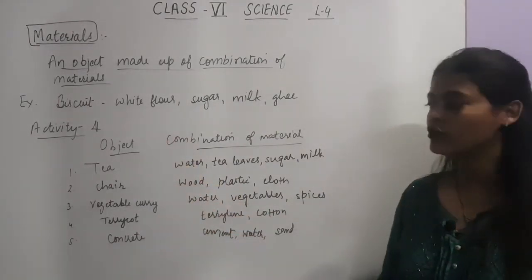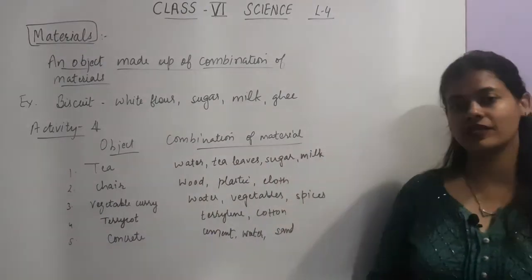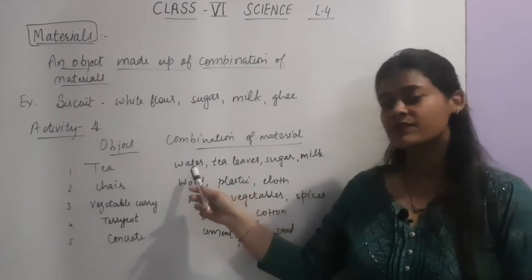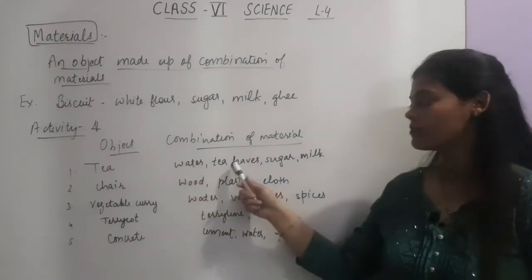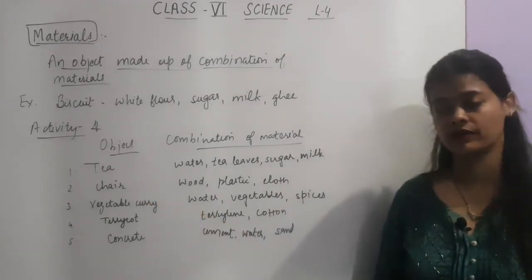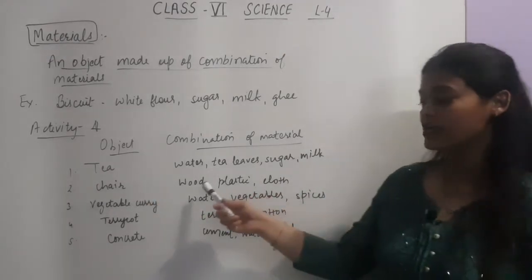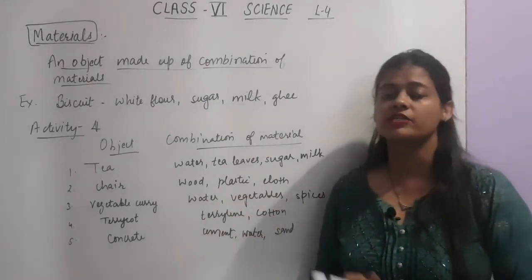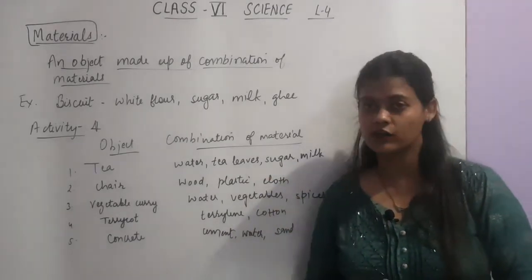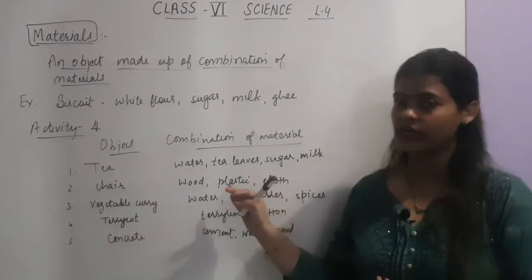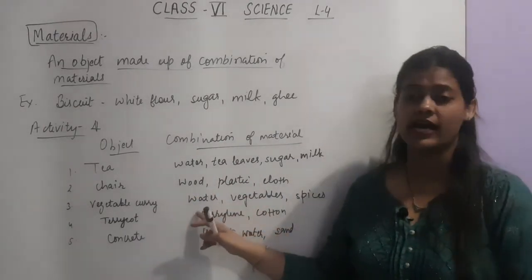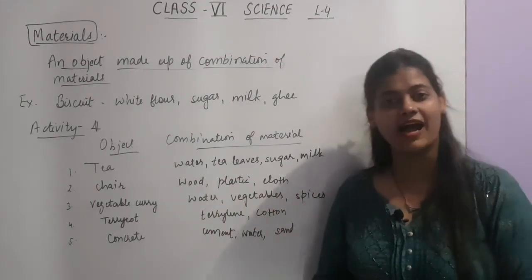Next is Activity 4 given in your book. Here the object is given and here are the combinations of materials. First is tea — tea is made up of water, tea leaves, sugar, and milk. Next is chair — chair can be a combination of wood and plastic both, along with cloth wrapping. So chair can be a combination of these three materials. Next is vegetable curry — it includes vegetables, water, and spices.